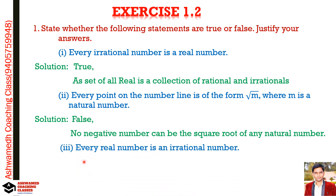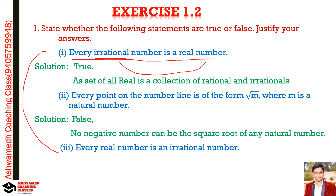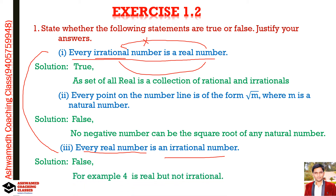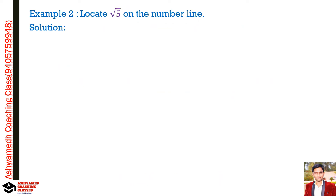Third: Every real number is an irrational number — False. The first and third statements are connected. While every irrational number is real (irrational is a subset of real), not every real number is irrational. Real numbers contain both rational and irrational numbers. For example, 4 is real but it is rational, not irrational.